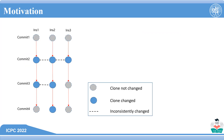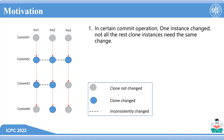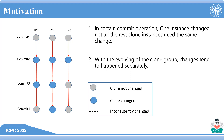Researchers agree that code clones bring extra maintenance effort to developers because of the necessity of simultaneous changes between clone instances. Here is a clone group containing three clone instances. These three instances changed consistently at commit 2. At commit 3, only two of them consistently changed. At commit 4, instance 2 changed separately.